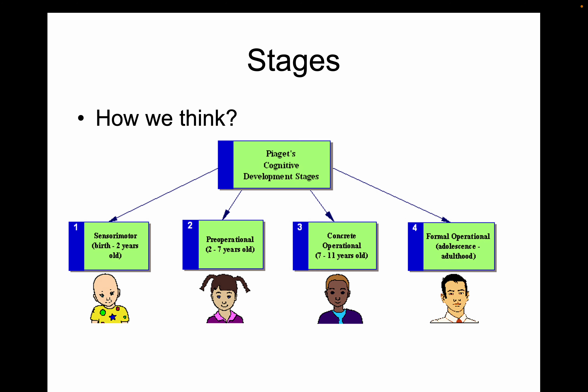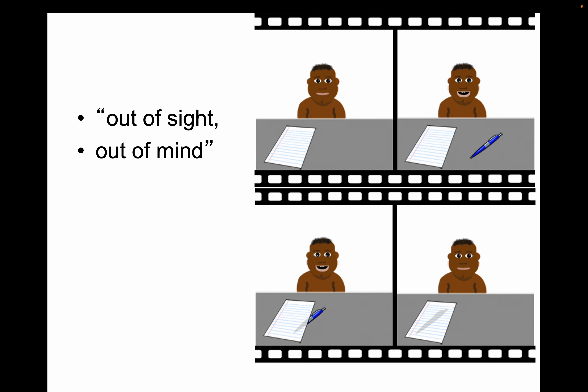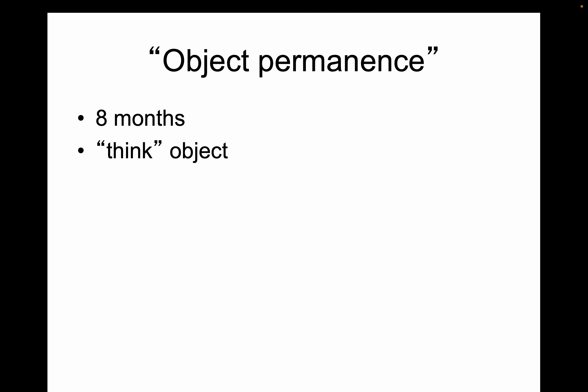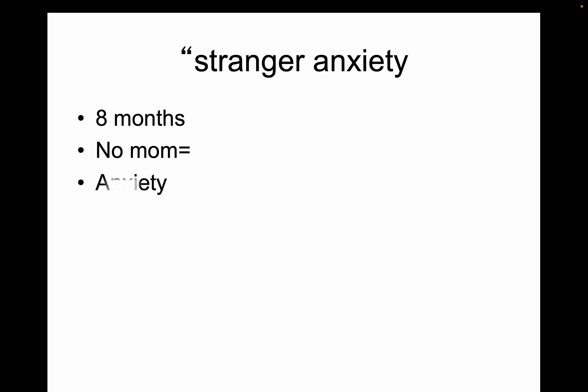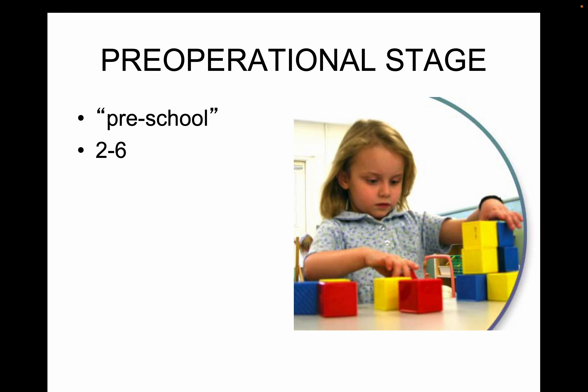Piaget was concerned about how babies think. The first stage is for infants — he called it sensory-motor. Infants sense things and move. Something important happens during this stage: object permanence. At about eight months, the kid realizes an object exists even when he doesn't see it. At the same time, if mom leaves the room, he'll be nervous — that's stranger anxiety, because now he can think about mom.